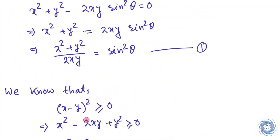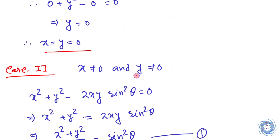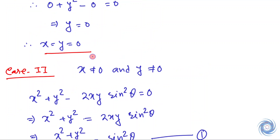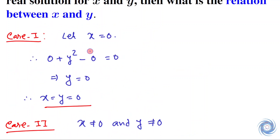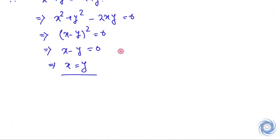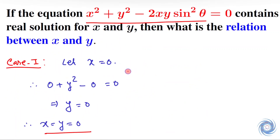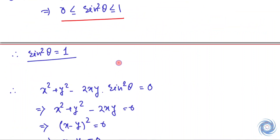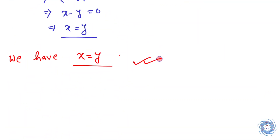In the second case, where x and y are both non-zero, we have x = y. Also in the first case, where one of x and y is zero, we also have x = y. So combining these two cases, we have x = y. We were supposed to find the relation between x and y, and we have got x = y. So we are done. Thank you.